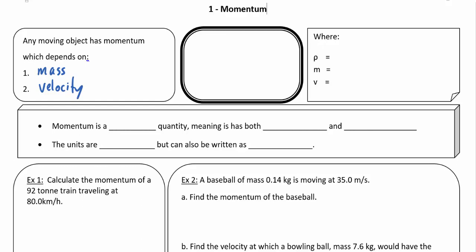In fact, the formula for momentum is ρ = m × v. This funky P-looking thing is actually the Greek letter rho, where ρ is the momentum, m is the mass in kilograms, and v is the velocity.